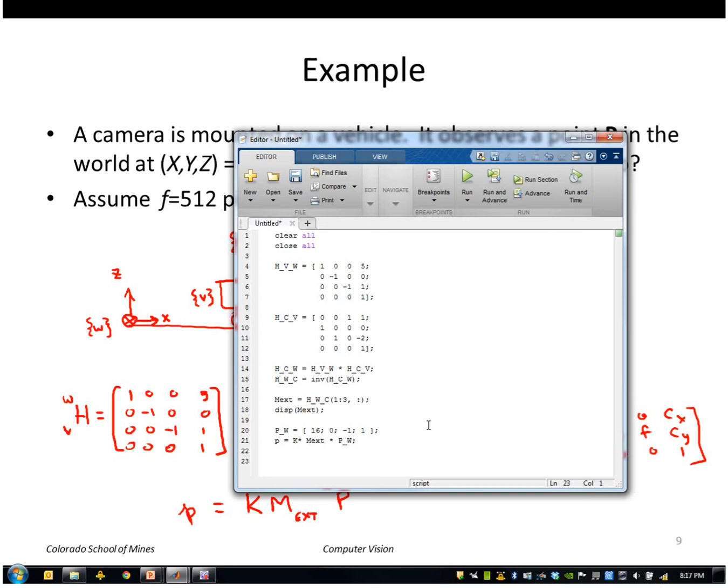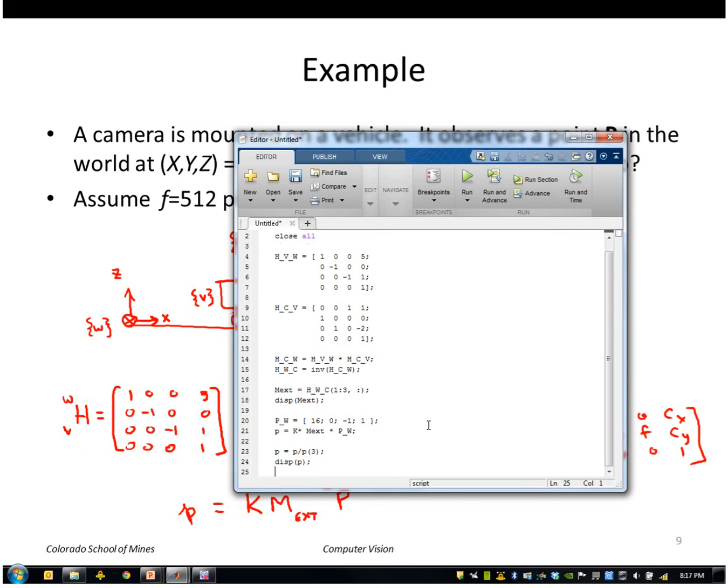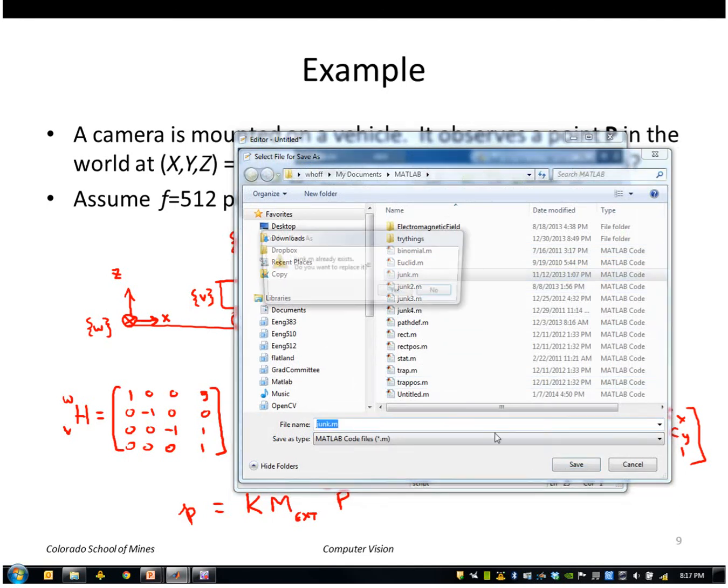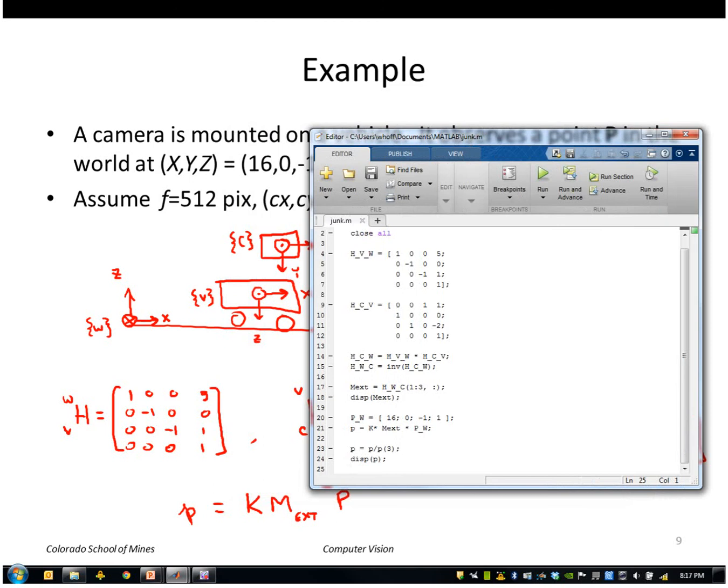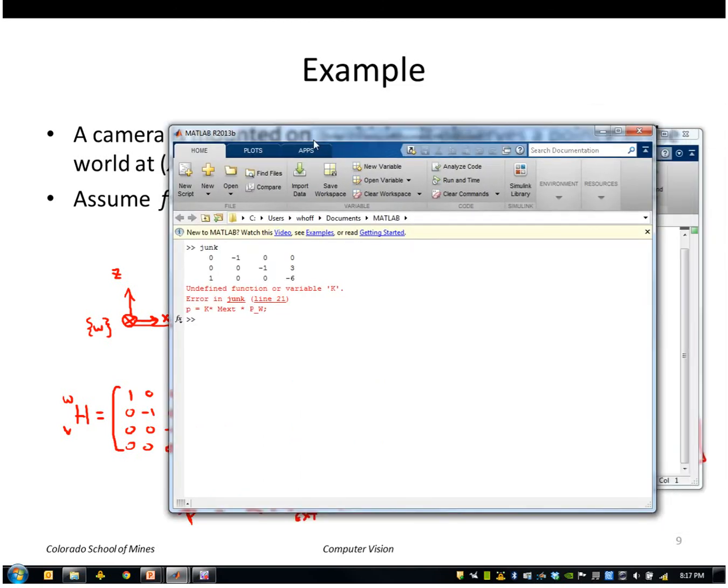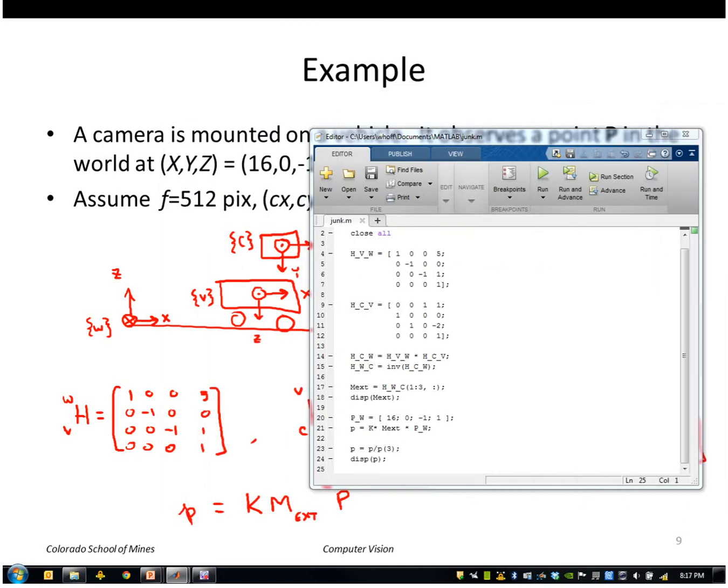And then finally, I should divide through by the third element of P, so that I can do with the statement P of 3. And that should give me my image point. So let me go ahead and run that. I'll save this. Whoops, got an error here. Undefined K. Oh, I forgot to define the matrix K.